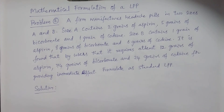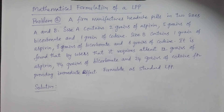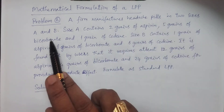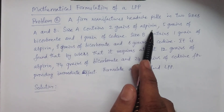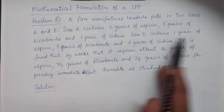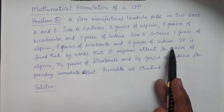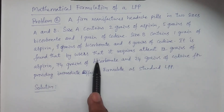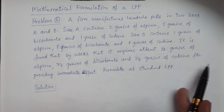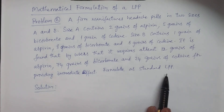In this lesson, I discuss one more problem — problem number 2 of mathematical formulation of a linear programming problem. A firm manufactures headache pills in two sizes, A and B. Size A contains two grains of aspirin, five grains of bicarbonate, and one grain of codeine. Size B contains one grain of aspirin, eight grains of bicarbonate, and six grains of codeine. It is found by users that it requires at least 12 grains of aspirin, 74 grains of bicarbonate, and 24 grains of codeine for providing immediate effect. Then formulate as a standard linear programming problem.